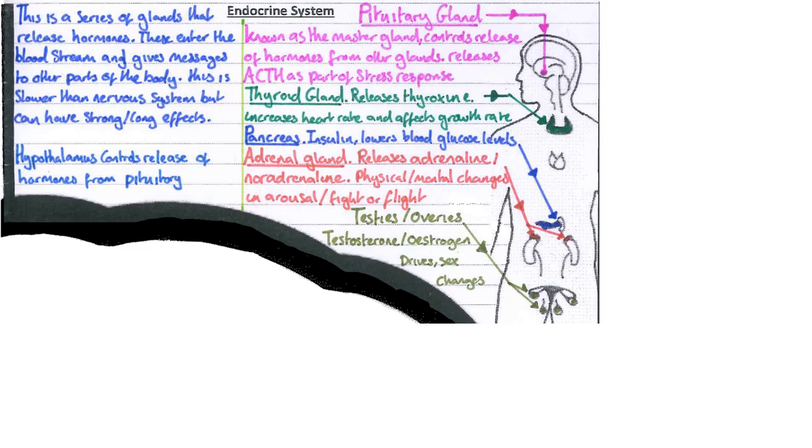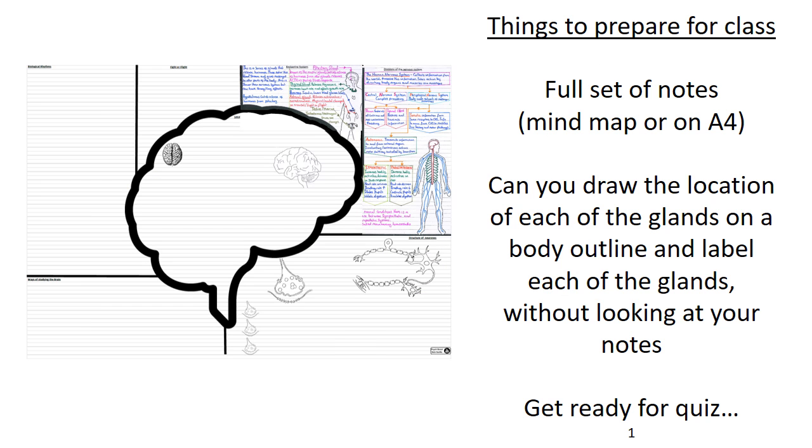The last section we'll talk about is the testes and ovaries. So these are the sex glands. They produce testosterone and estrogen, and they have a range of developmental effects across the rest of the body with sex changes. Testosterone we're going to link to later on in the aggression module, and we'll talk about its effect in males and aggression.